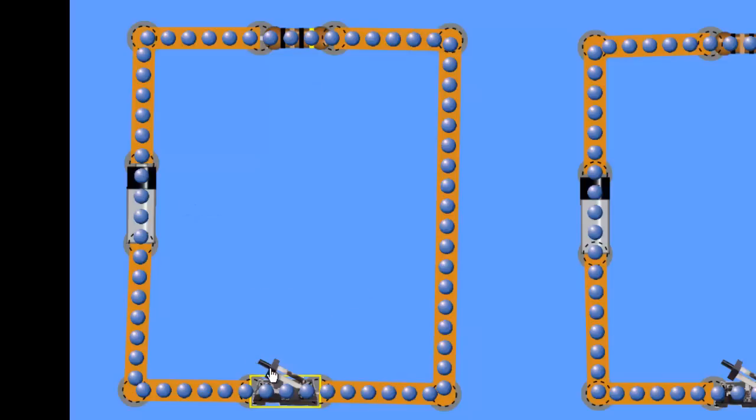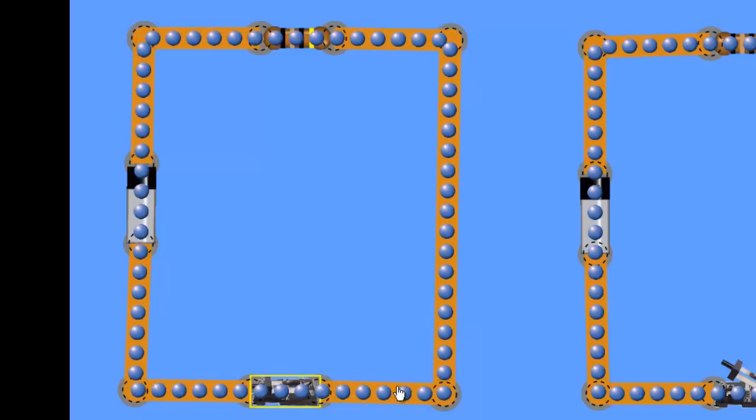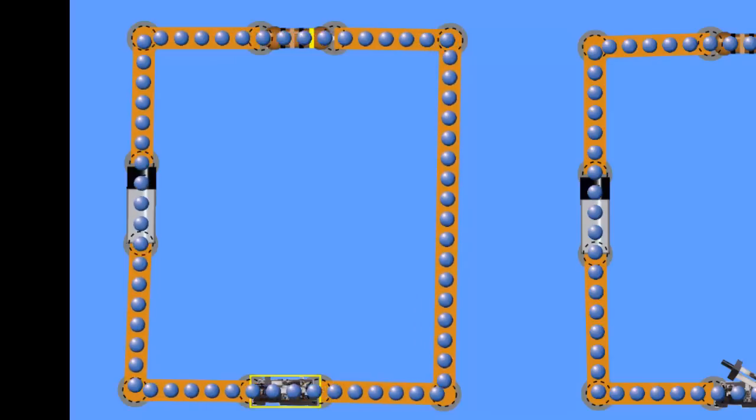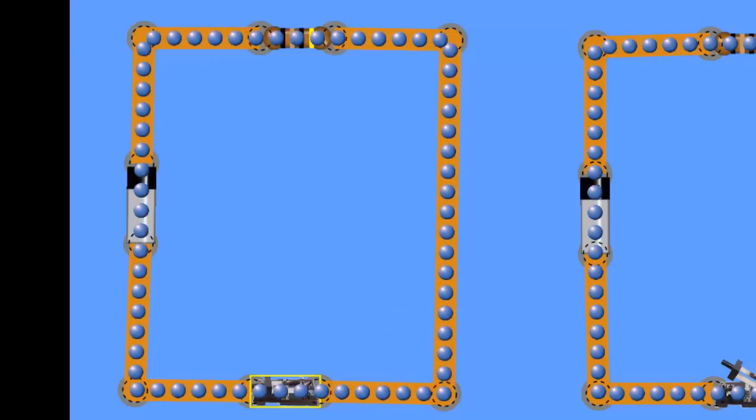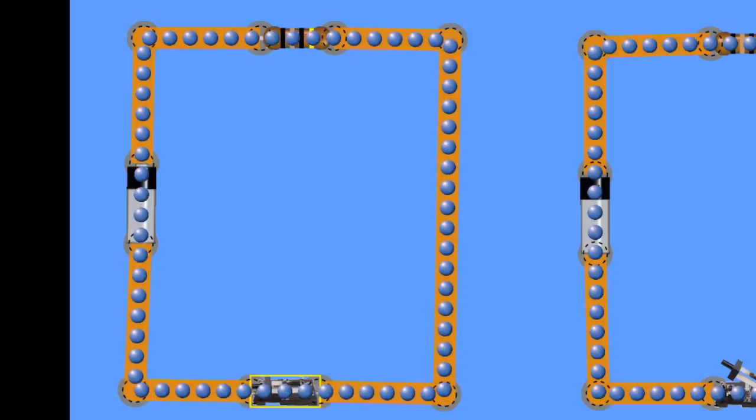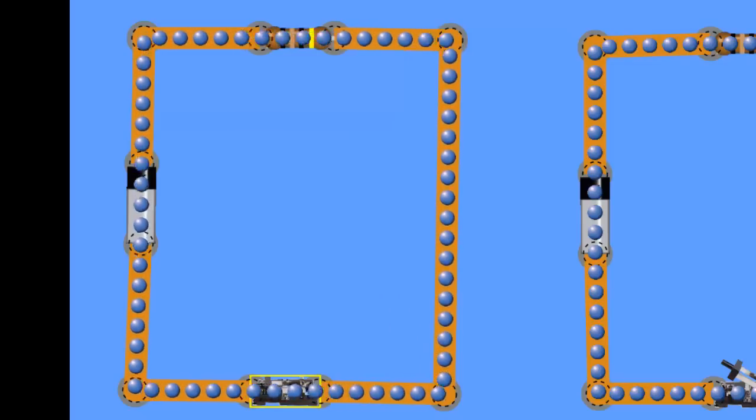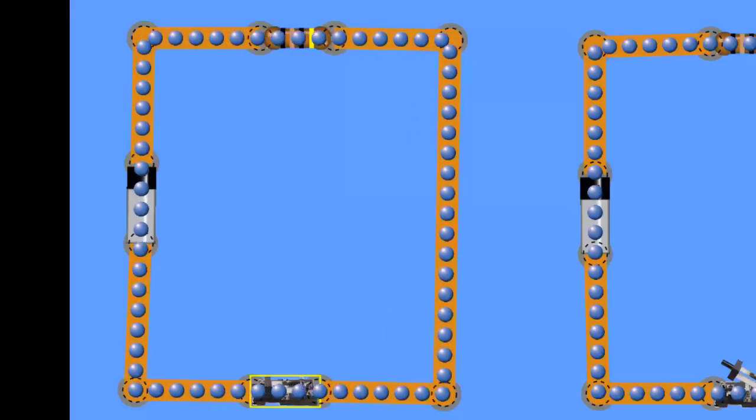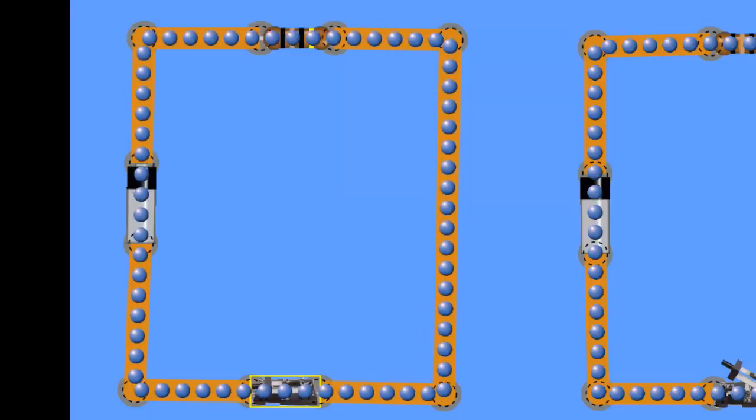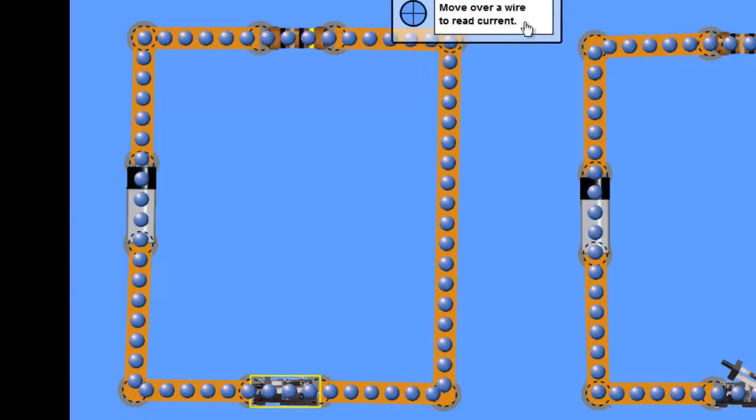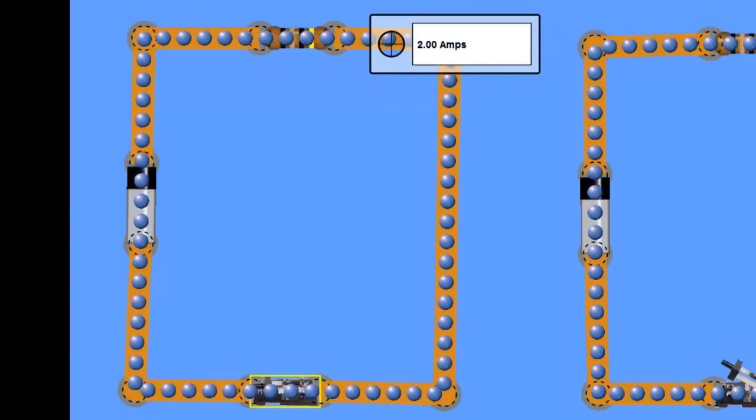So let's close the contact and we see the current flowing in the circuit here. Each of these little balls represents about a coulomb of charge. Each one of those balls is passing past a point in the circuit every second which represents 2 amps. Let's measure that and make sure we're right. I'm going to take this little non-contact ammeter and sure enough we have 2 amps.